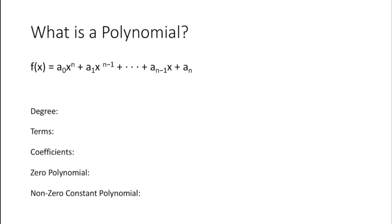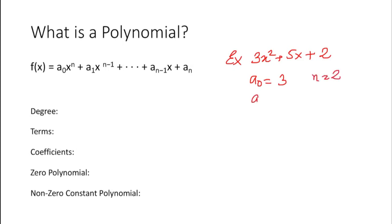An example of this format would be 3x² + 5x + 2. This is a polynomial expression. It is of the format a₀xⁿ, where a₀ equals 3 and the value of n equals 2. So a₁ would be 5, n minus 1 equals 1, and aₙ equals the last term, which is 2. Any equation of this form is a polynomial.